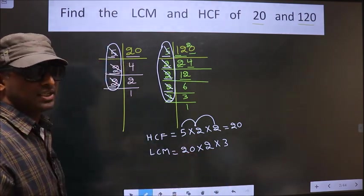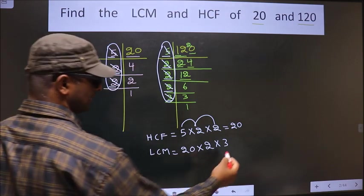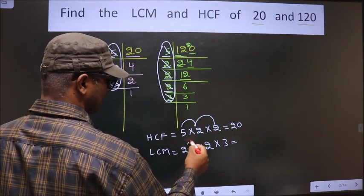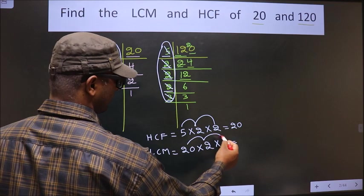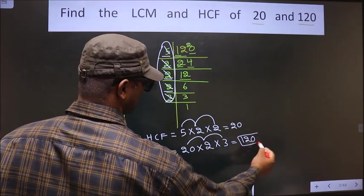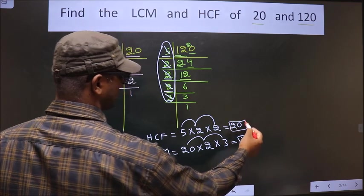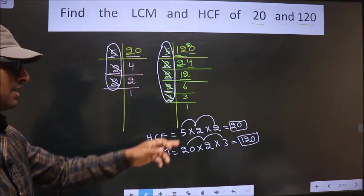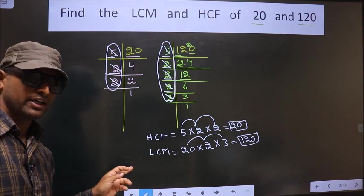So now you multiply these numbers. That will be your LCM. That is 20 into 2, 40. 40 into 3, 120. So this is your LCM and this is your HCF. Am I clear?